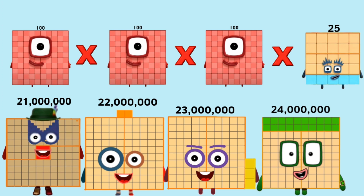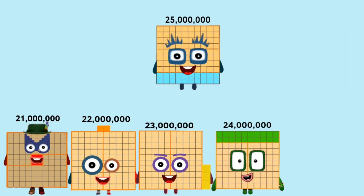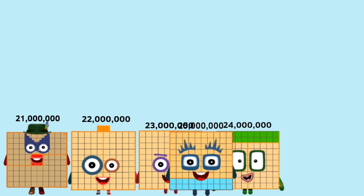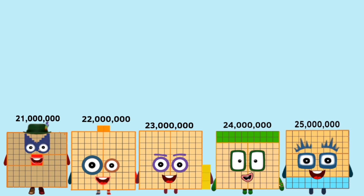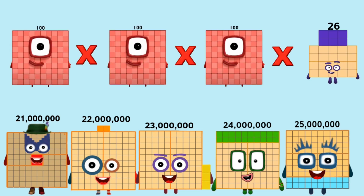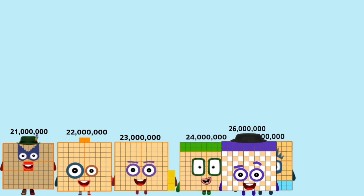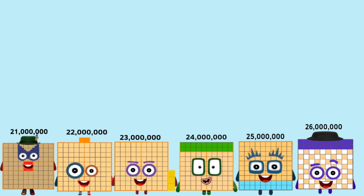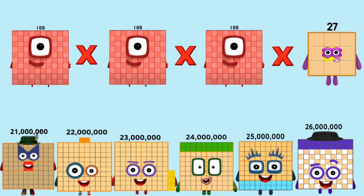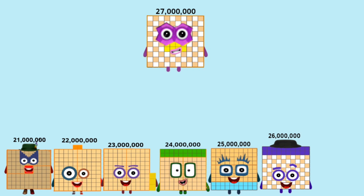100 times 100 times 100 times 25 equals 25,000,000. 100 times 100 times 100 times 26 equals 26,000,000. 100 times 100 times 100 times 27 equals 27,000,000.